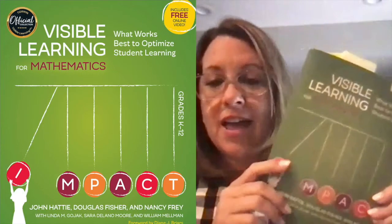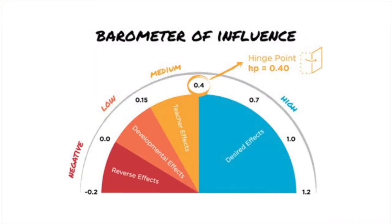I'll fall back to the experts — Hattie has done a lot of research about instructional practices. What Hattie and his team did was look at different teaching practices and assign them an effect size. Implementing effective practices is just as important as eliminating ineffective practices. The hinge point is 0.4 — an effect size of 0.4 represents a year's worth of growth in a school year. Anything with a score higher than 0.4 is a teaching practice we really want to embrace.